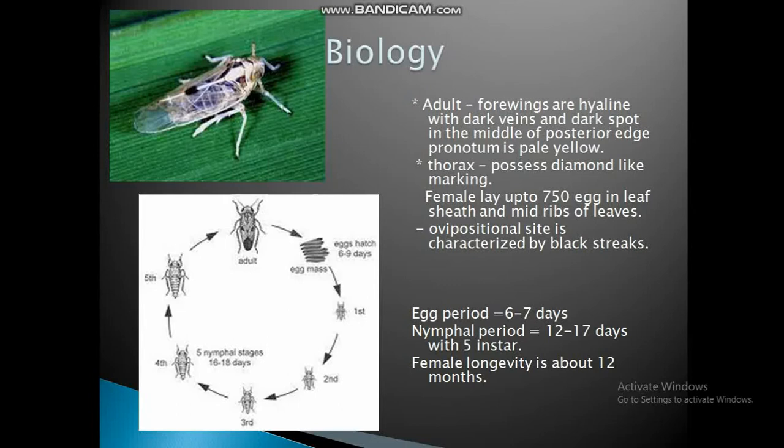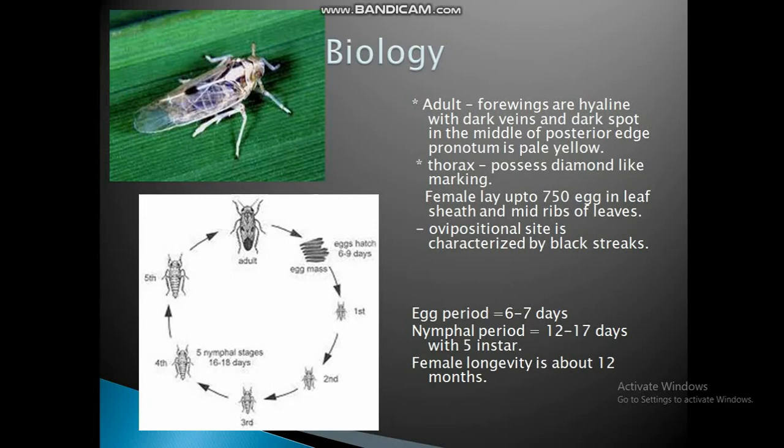Biology: adults have two forms — macropterous and brachypterous. Forewings are transparent with dark veins and a darkest spot in the middle of the posterior edge. Pronotum is pale yellow color, with a line color contrast following forewings with dark veins. The thorax possesses a diamond-like marking.